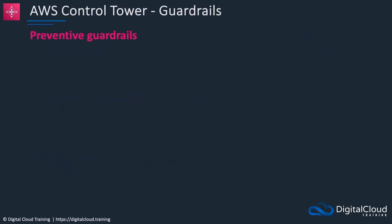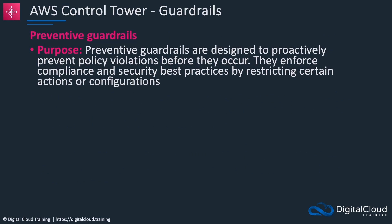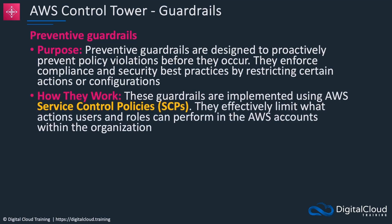The auditing information is very important — it may even be a compliance and security requirement — and you don't want any individual administrator to be able to stop that auditing process. So we have the guardrails. Preventive guardrails proactively prevent policy violations before they occur, enforcing compliance and security best practices by restricting certain actions or configurations. Essentially we're talking about SCPs — service control policies — which limit the API actions that are available. Even if somebody has a specific API action permission in an IAM policy, they still cannot perform that action if it's not allowed by the SCP.